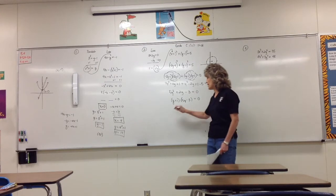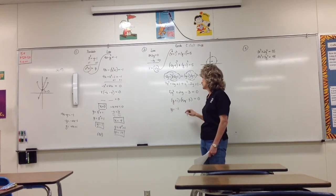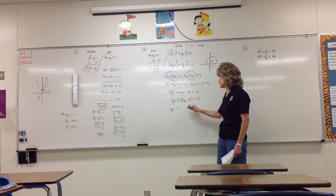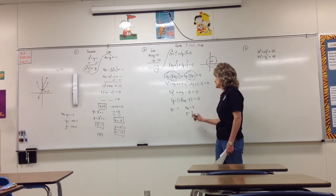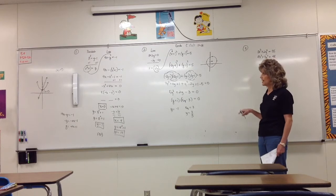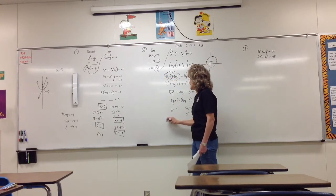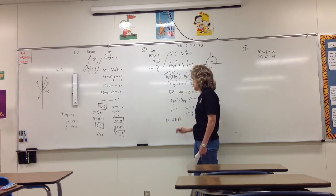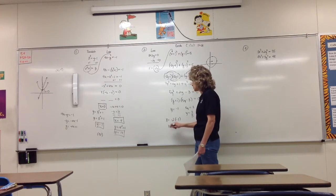We have two possible y values: y equals negative 1, or 5y minus 3 equals zero means y equals 3/5. Each y value has an x to go with it. Going back to x equals negative 2y: when y equals negative 1, x equals negative 2 times negative 1, so x equals 2.